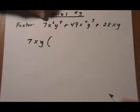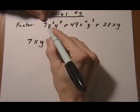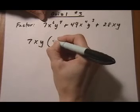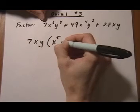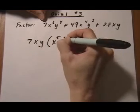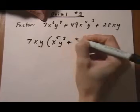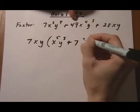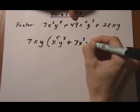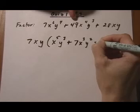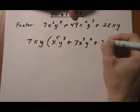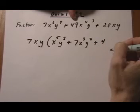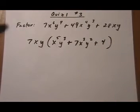Then we write our leftovers in parentheses. So we pulled out a 7 and 1x and 1y, so we're left with x to the 5th and y cubed. For the next term we pulled out a 7 so we're left with 7x cubed y squared. And then for the last term we're left with a 4. And we pulled out the x, y so there's nothing else there.